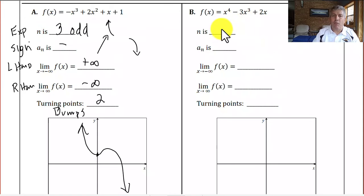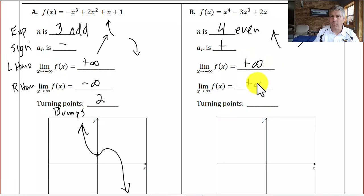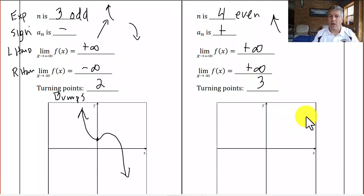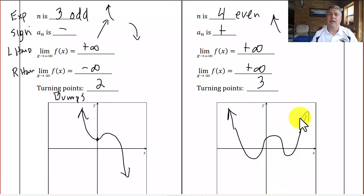In example b, we have a fourth-degree polynomial, so degree 4 — it's even. Our leading coefficient is positive, so our end behavior goes in the same direction to positive infinity. Both left-hand and right-hand behavior go to positive infinity. We have three turning points on our graph. Putting the end behavior in and drawing a graph with a couple of bumps, our graph might look something like that.